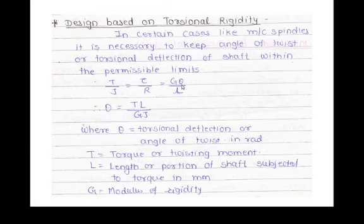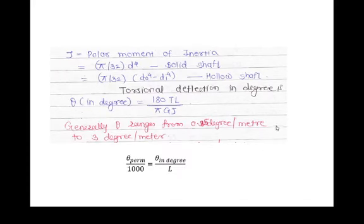The angular deflection or angle of twist is calculated as θ = TL / (G × J). Here, J = (π/32) × d⁴ for a solid shaft, and for a hollow shaft J = (π/32) × (d_o⁴ − d_i⁴). The angle of twist in degrees can then be calculated by multiplying by 180/π.